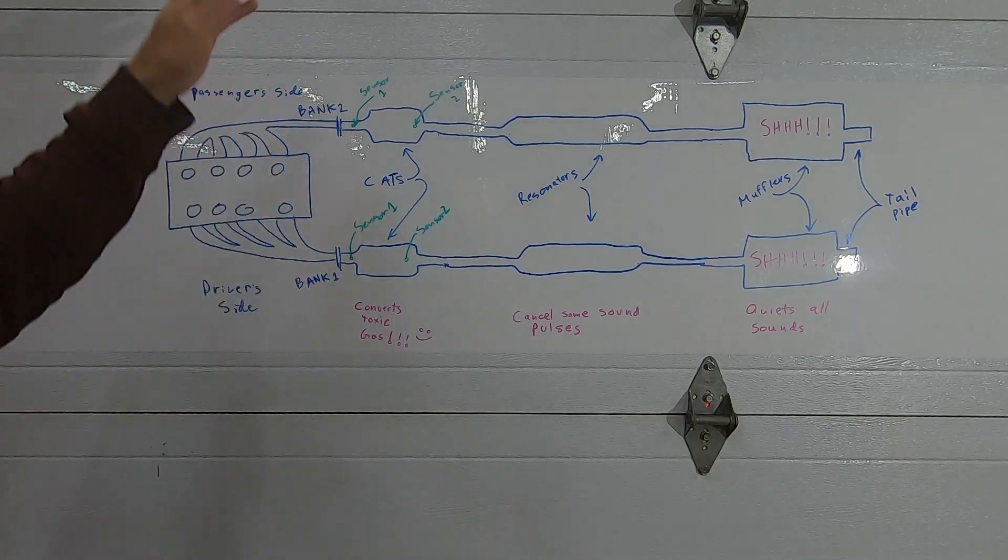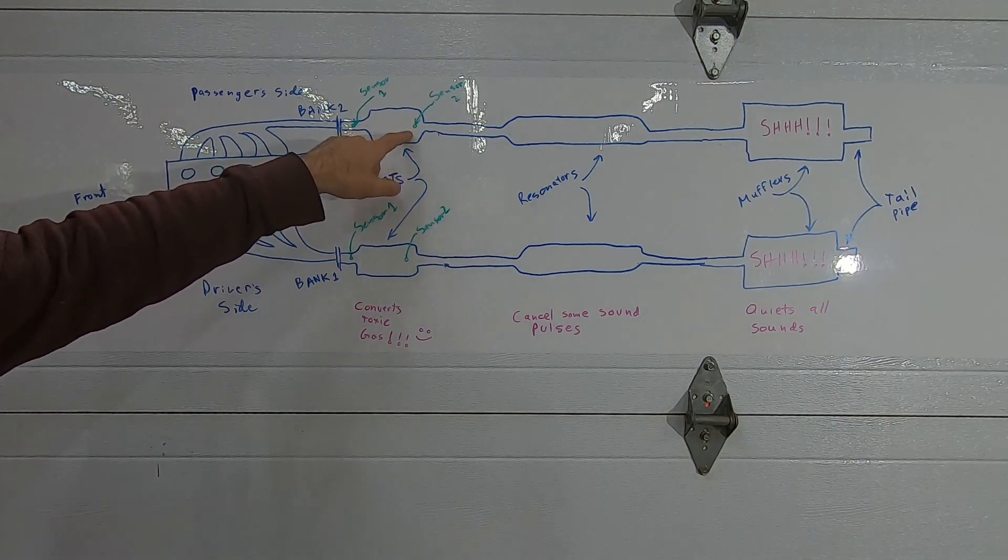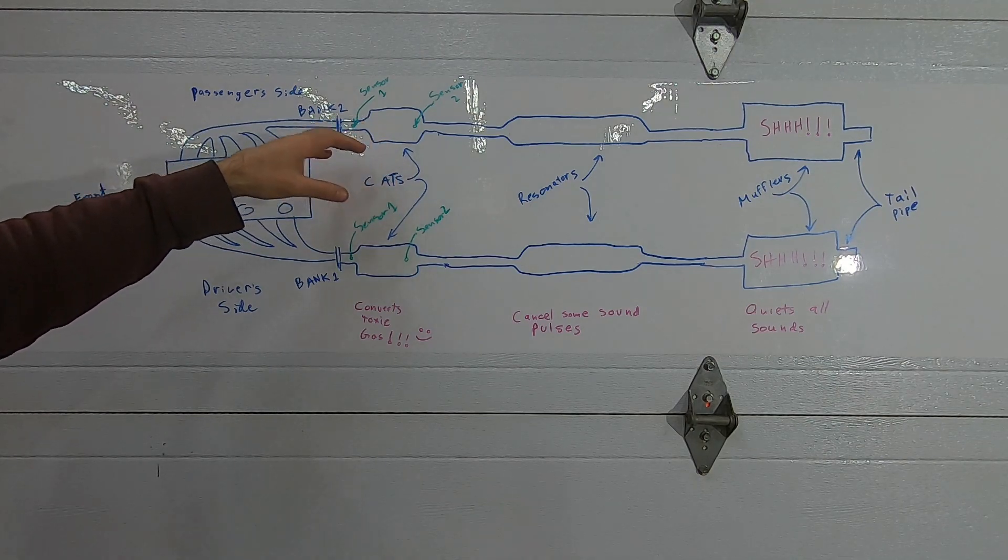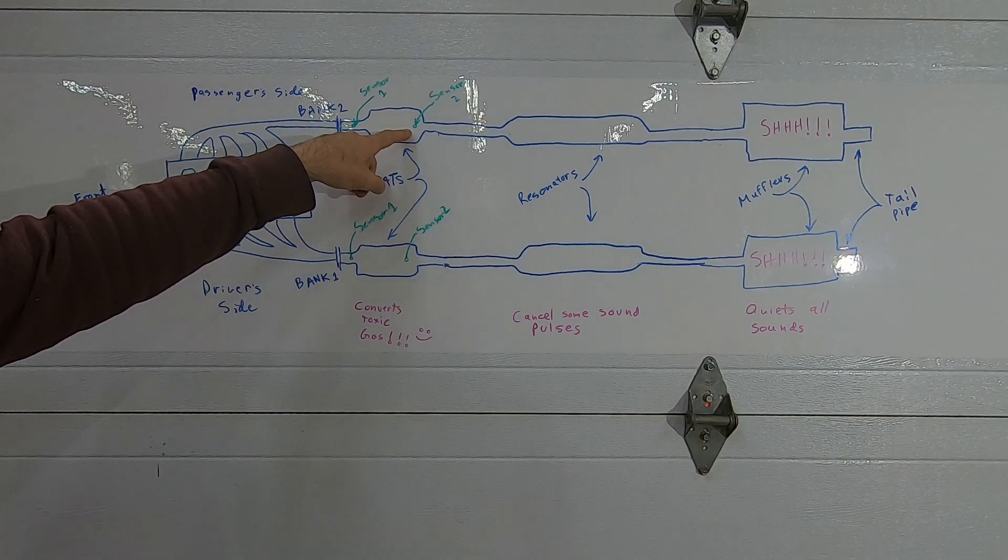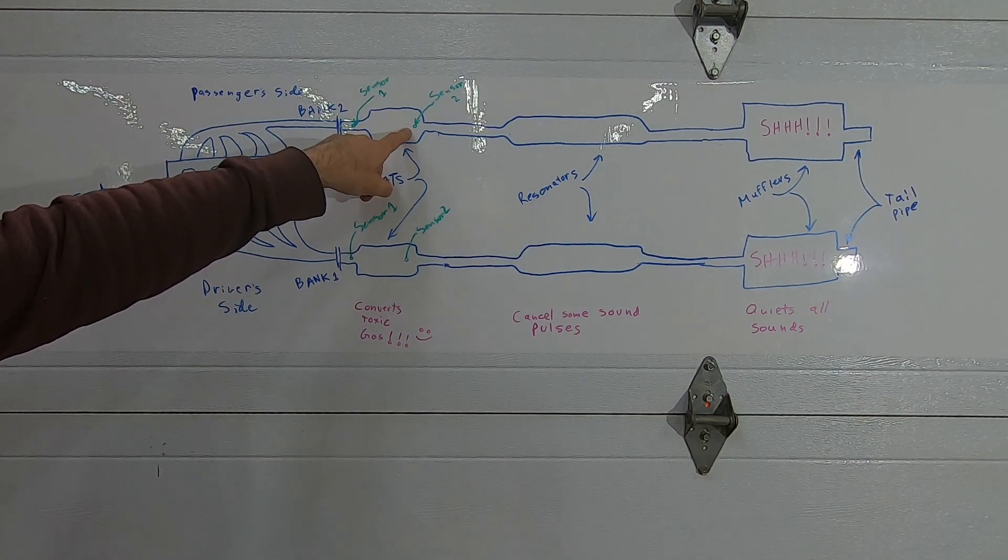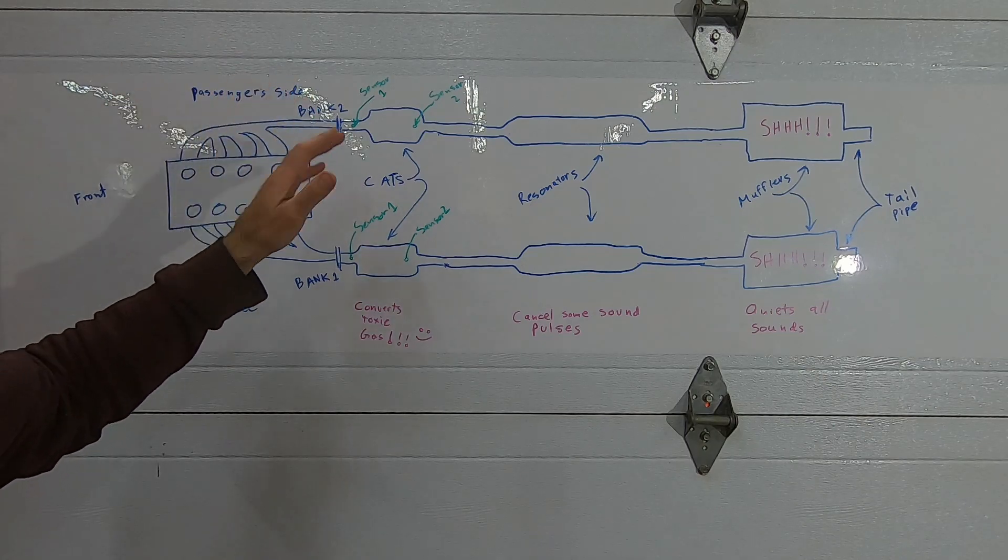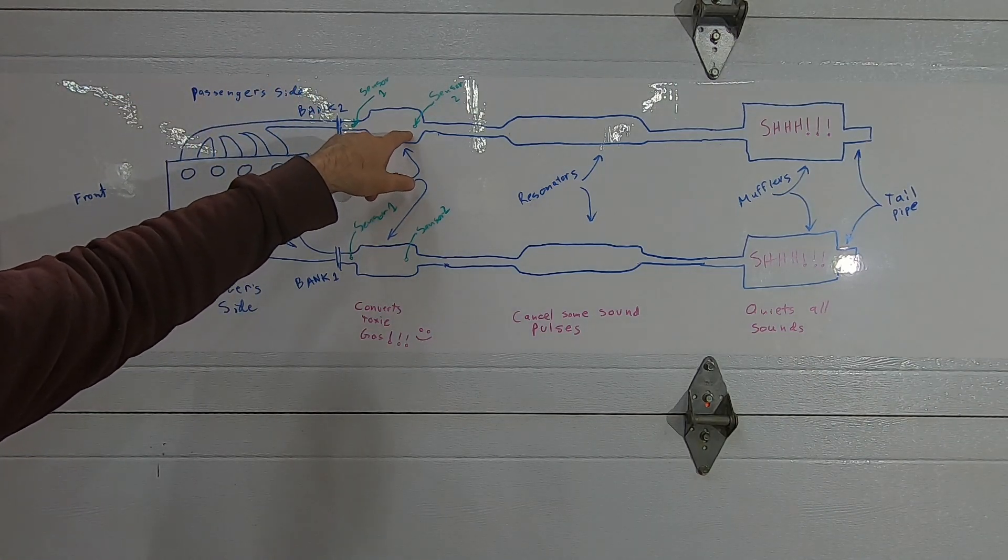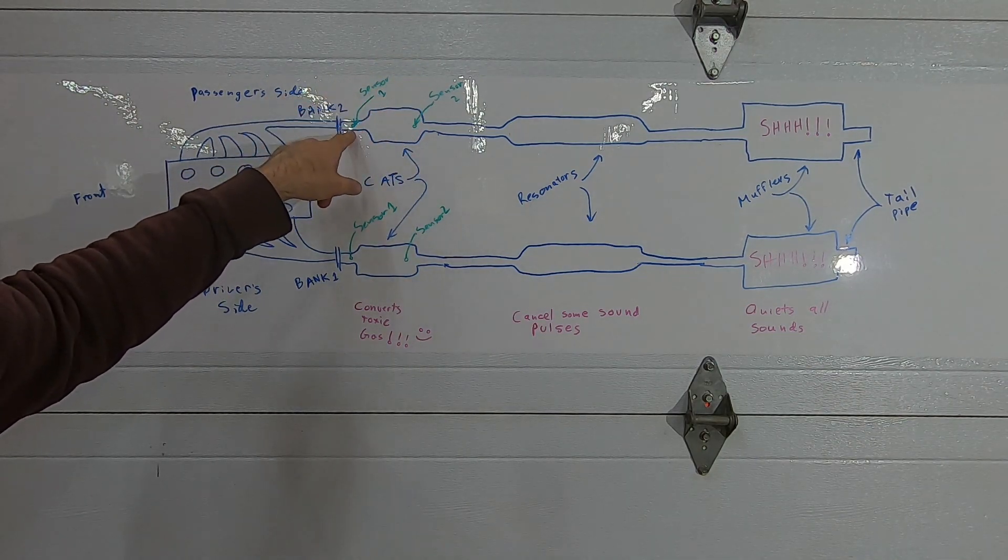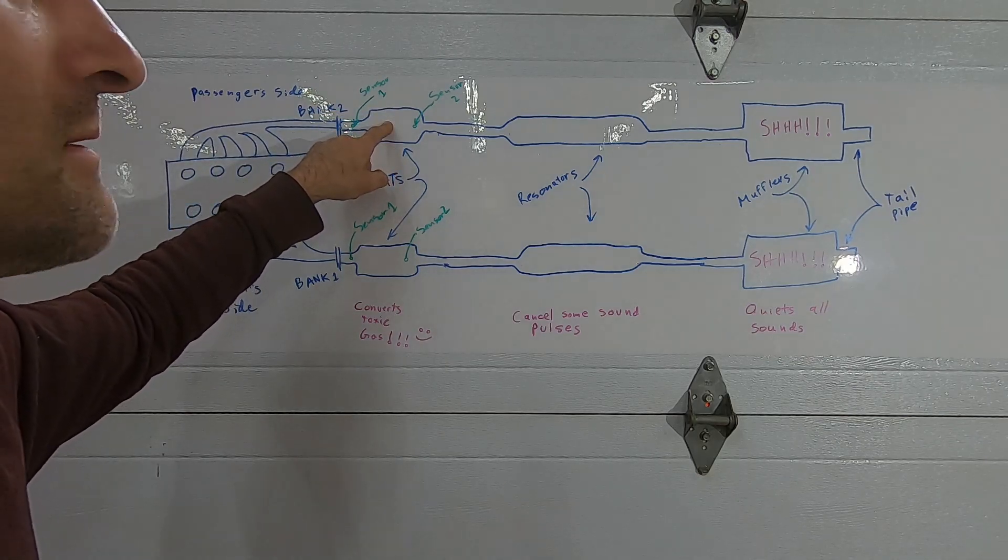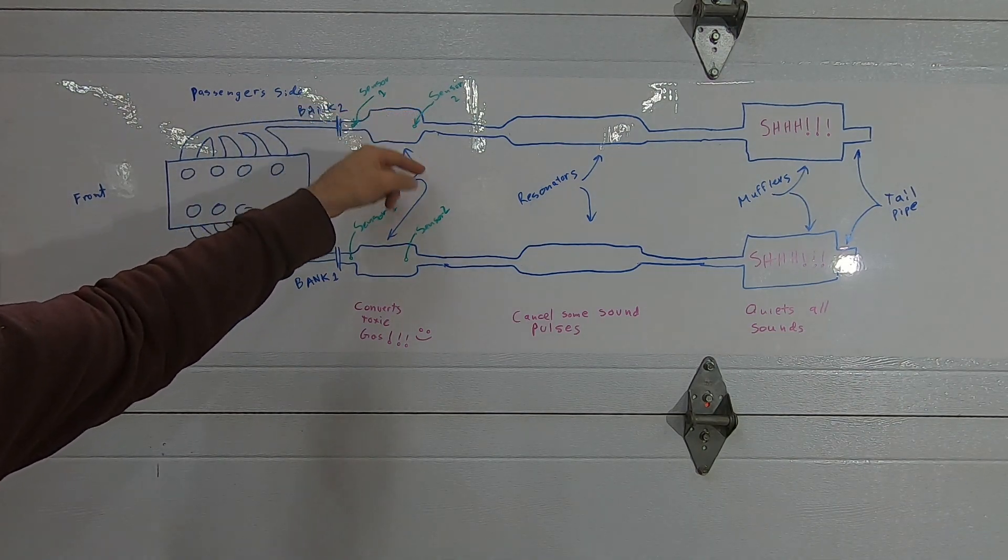The sensor after the catalytic converter should not be fluctuating because the catalytic converter is doing its job in stabilizing those gases, and it should have a much more stable reading. And that reading should be fairly stable about half a volt. There is some minor variance as load comes and goes on the engine, but overall it should be fairly stable. If you see this sensor fluctuating at the same rate as this sensor, then your catalytic converter is not working. There's no reduction in the chemistry or no change in the chemistry and the gas is flowing through, so that's a dead giveaway that this cat is not working.